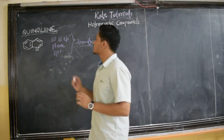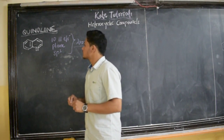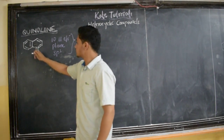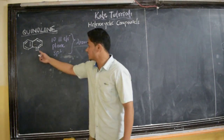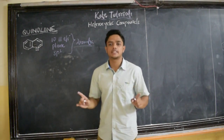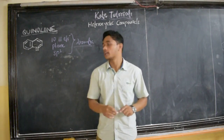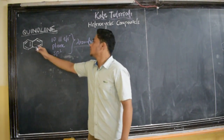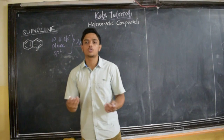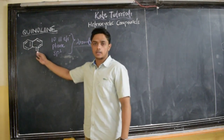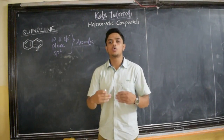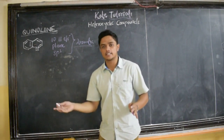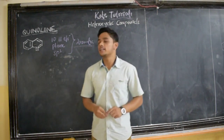Before moving to basicity, consider this lone pair of electrons. The lone pair of electrons present on nitrogen is present in an sp2-hybridized orbital. These are not present in an unhybridized p-orbital. Because of this, they are out of the ring and are not involved in the resonance. Since the ring already has 10 pi electrons, there is no need for these two electrons. So these electrons are out from the ring and not involved in aromaticity or resonance — because of which, nitrogen is basic in nature.